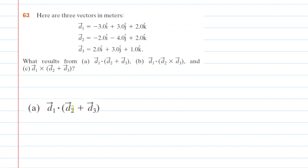In part A, we have to do the sum of vectors d2 and d3, and then we have to do the dot product. Notice that we are following an order of operations — you would have to calculate what's inside the parentheses first, and that would be the sum of vector d2 and d3.